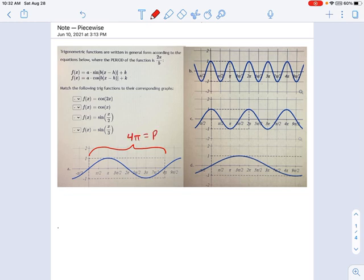So in this case, 4π would be the period. And what we want is to figure out which one of these graphs match the equations over here. Take a look at the equations. There's no change in a.